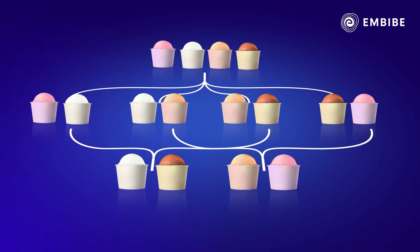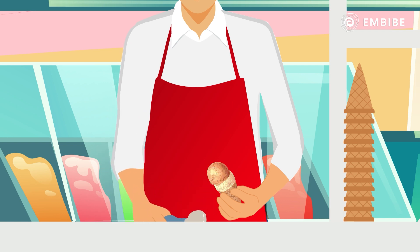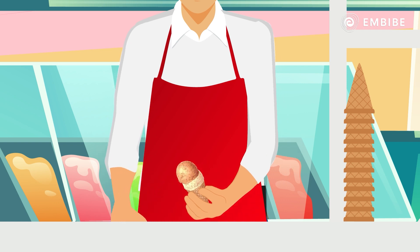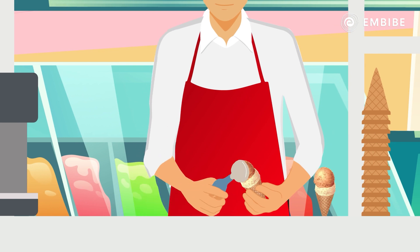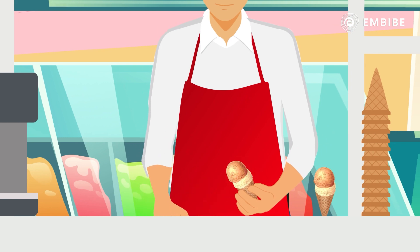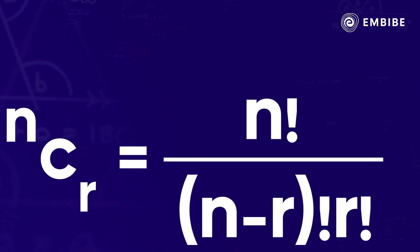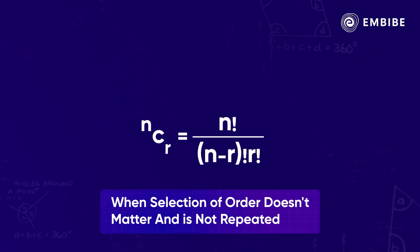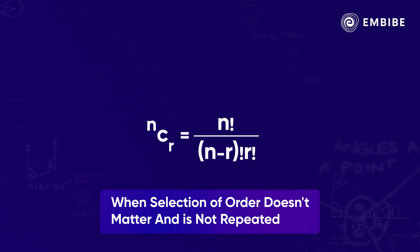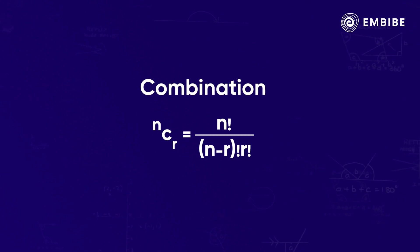Let's find it. In this situation, the order in which the server selects the flavour to make a cone does not matter, and also he makes sure that you don't get the same combination twice. So, in situations like these when selection order doesn't matter and is not repeated, you can use combinations.